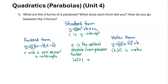If the absolute value of a is bigger than 1, it's a stretch. If it's less than 1 — a fraction smaller than 1 — then it's a vertical compression. That's the key thing to keep in mind when it comes to graphing.